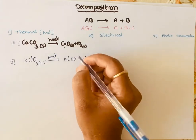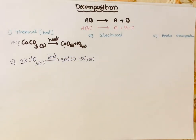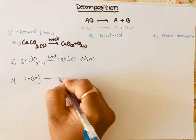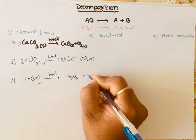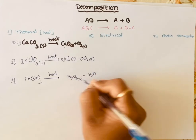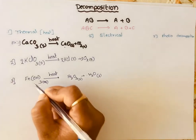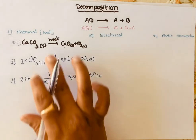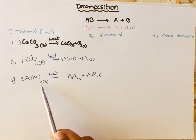To balance this reaction, three moles of oxygen are released — two moles of potassium chlorate gives two moles of potassium chloride and three moles of oxygen. One more example for thermal decomposition is ferric hydroxide, Fe(OH)3. When you heat it, it undergoes dissociation into ferric oxide and water. Two moles of Fe(OH)3 gives one mole of ferric oxide and three moles of H2O.